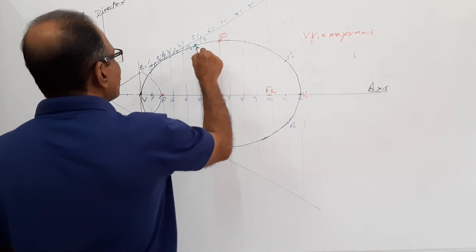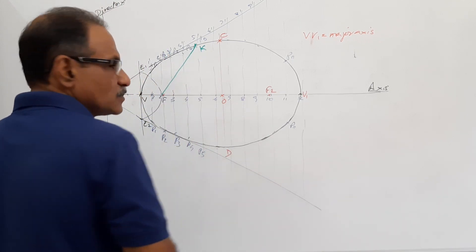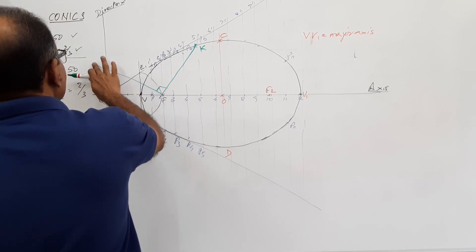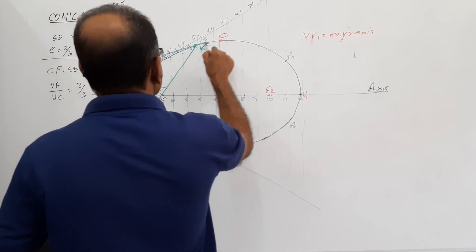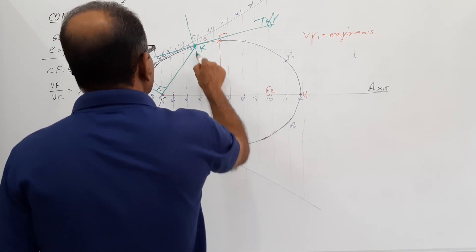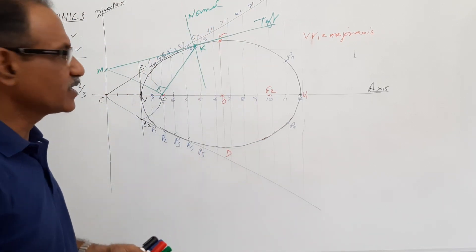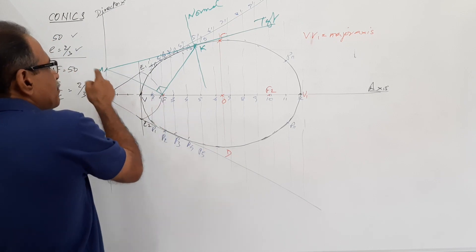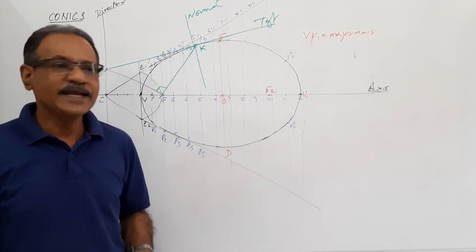To draw normal and tangent at any point: take K as the point where you want to draw the normal and tangent. Join K to F by a straight line. Draw a perpendicular to KF at F. You get point M on the directrix. Join M to K and extend — that is the tangent at K. The perpendicular to that line through K is the normal.